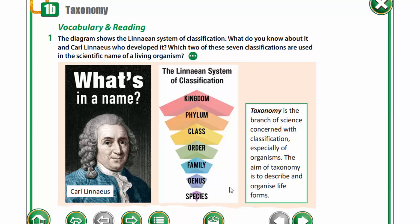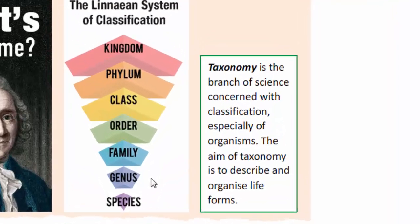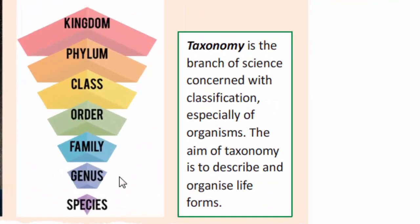They are genus and species. And let's read the definition of taxonomy. It is the branch of science concerned with classification, especially of organisms. The aim of taxonomy is to describe and organize life forms.